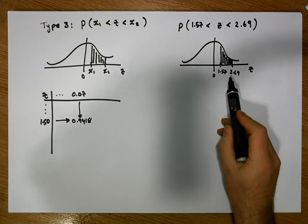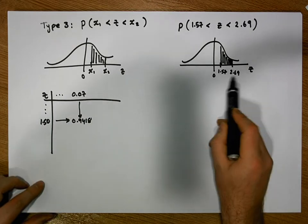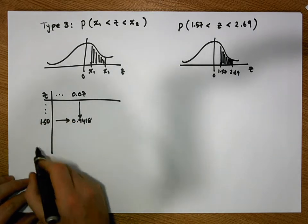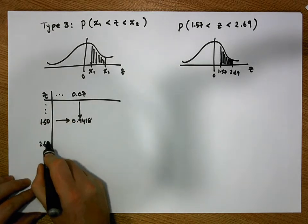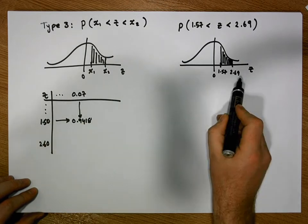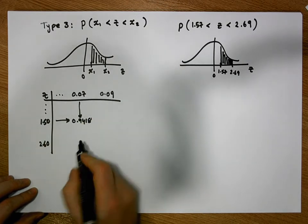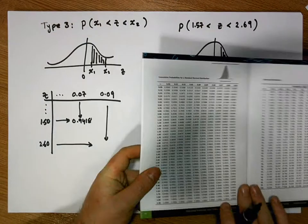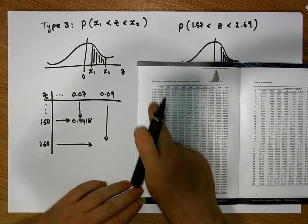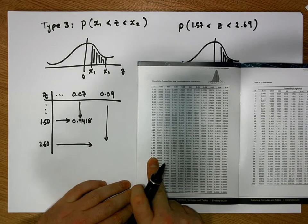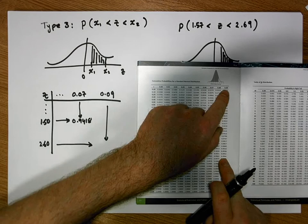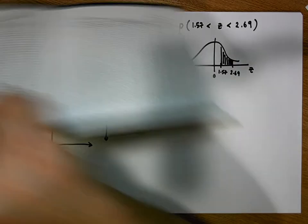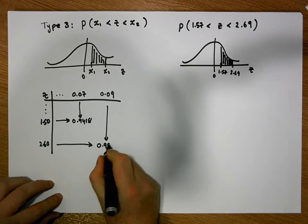Our second bound is 2.69. The first significant digit and first decimal digit is 2.6, so we come down the first column to 2.60. We then come across the first row to 0.09 and triangulate to give us our second value. Looking up 2.69, we come down to 2.6 and across to the column labeled 0.09, giving us a value of 0.9964.